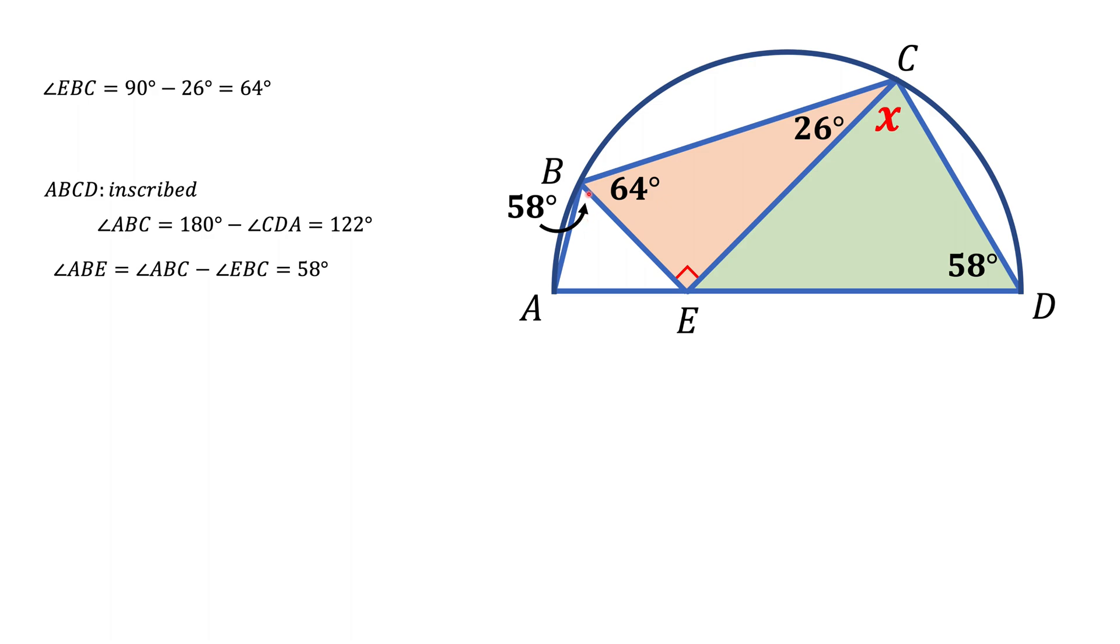Next, we're going to connect points B and D. Notice that inscribed triangle ABD has side AD which is the diameter of the circle. Therefore, the angle opposite the diameter, angle ABD, must be 90 degrees. Part of that angle is 58 degrees, so the other part is 32 degrees. Notice this 32 degrees is part of the 64-degree angle, so the other part is also 32 degrees.